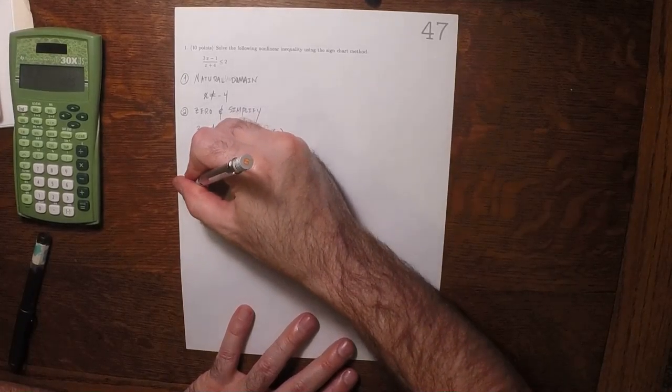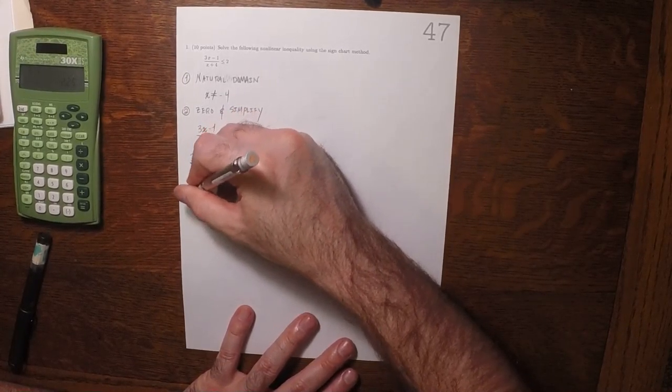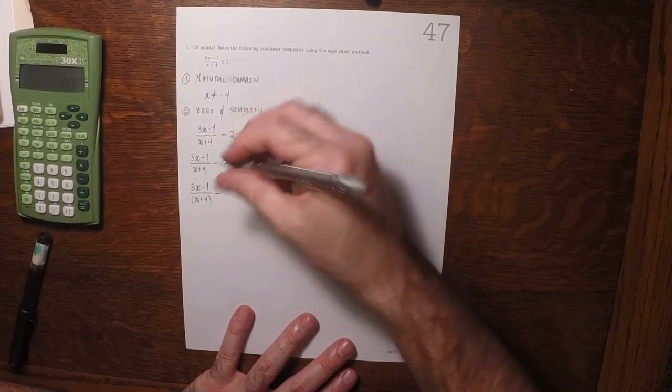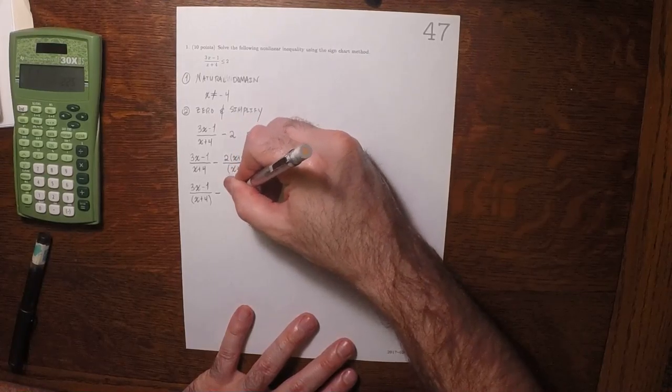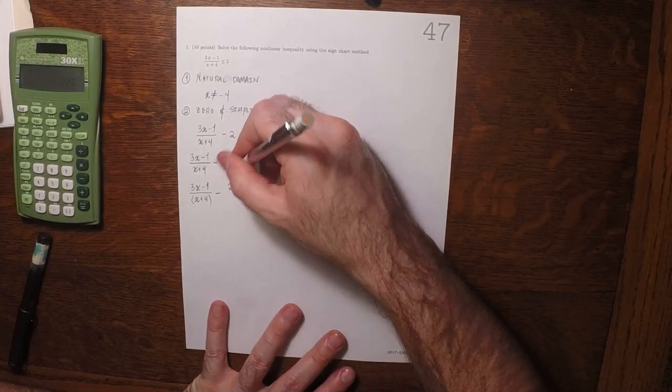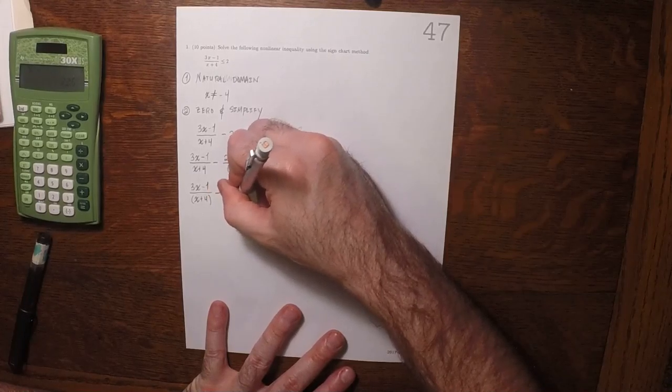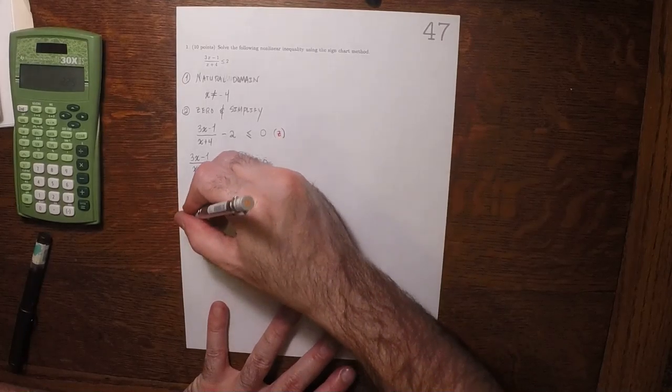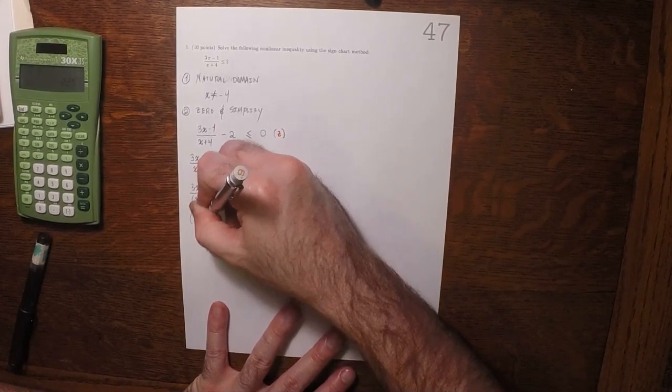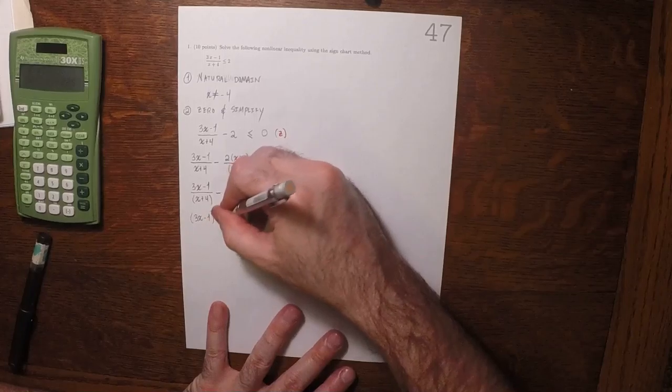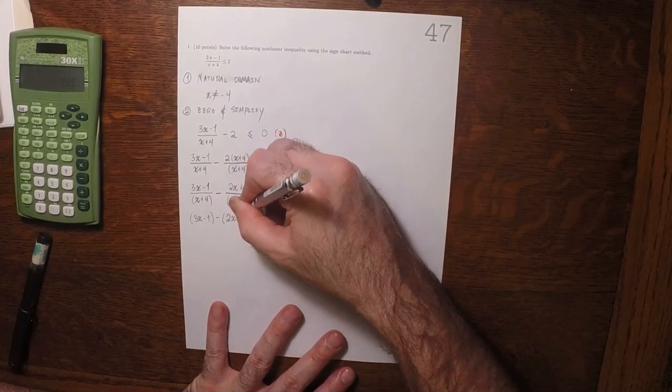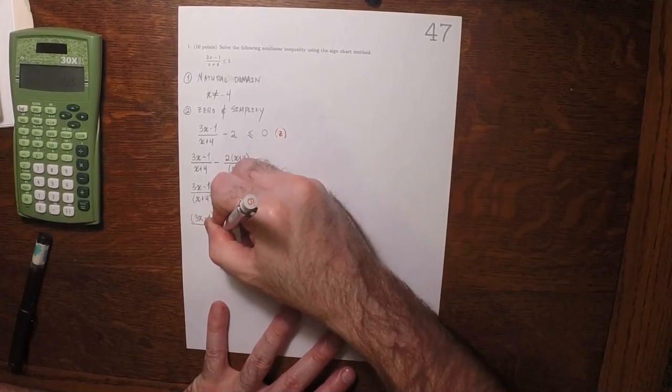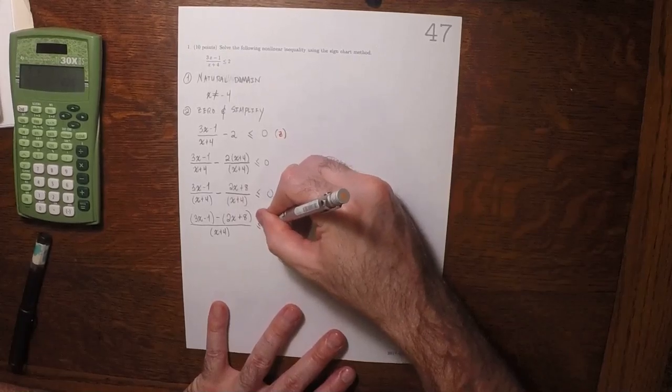This would be (3x - 1)/(x + 4) minus (2x + 8)/(x + 4) less than or equal to 0. Now we'll perform the subtraction, so (3x - 1 - 2x - 8)/(x + 4) is less than or equal to 0.